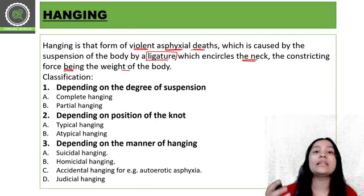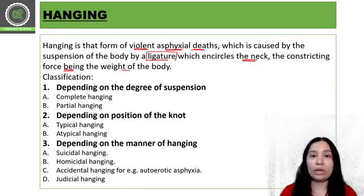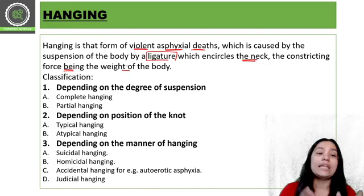Now we have the classification of hanging. Please note that hanging is a type of asphyxial death — violent mechanical asphyxia. The constricting force in hanging is the body weight. There is a requirement of a ligature which encircles the neck, and because of the body weight, asphyxia occurs. Now we have some specific classifications of hanging.